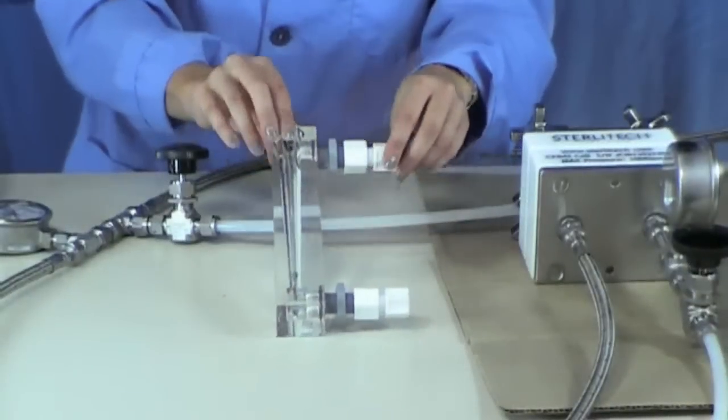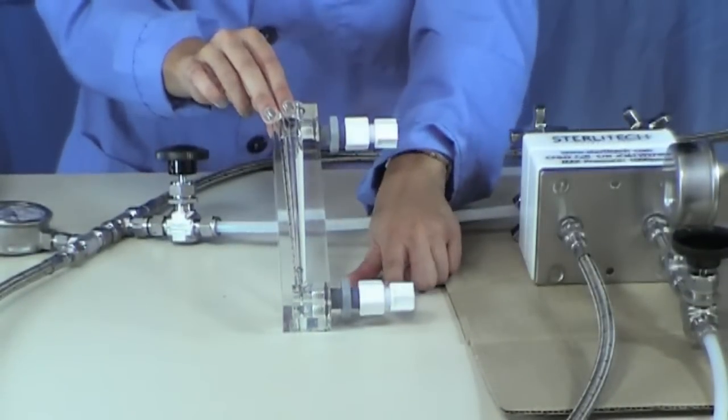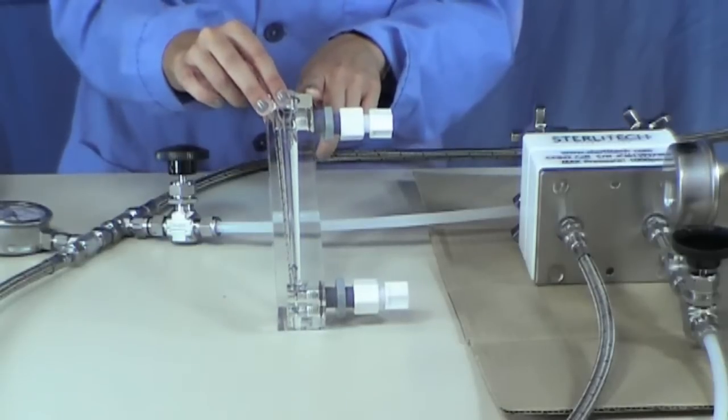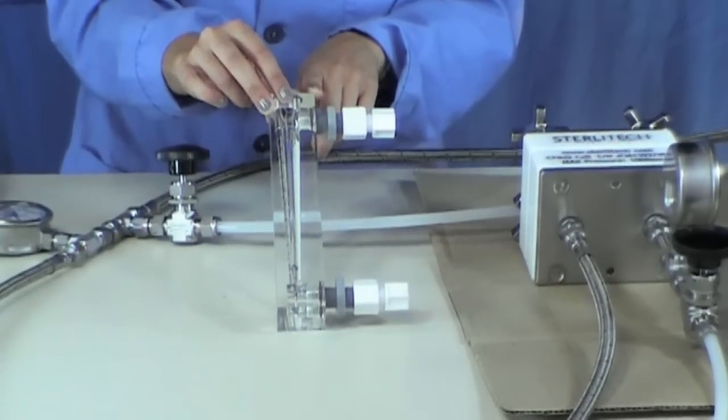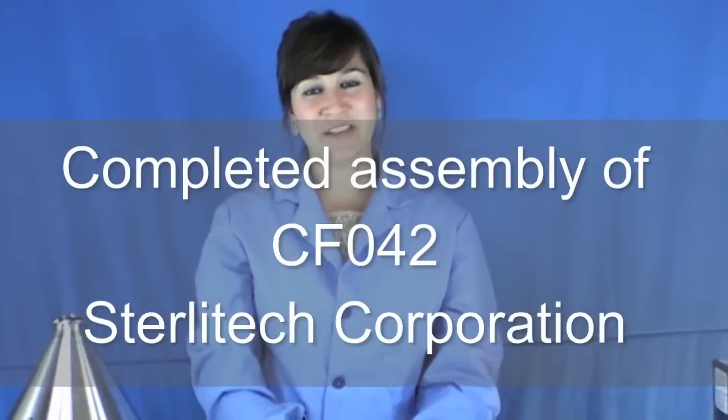Finally, the tubing from the concentrate control valve will connect into the base of your flow meter. The outlet is located at the top and will divert back into the feed tank. And that completes the assembly of your CFO42 system.